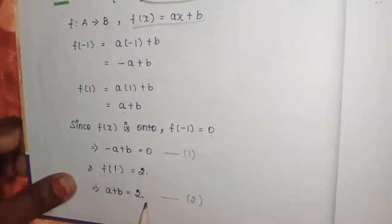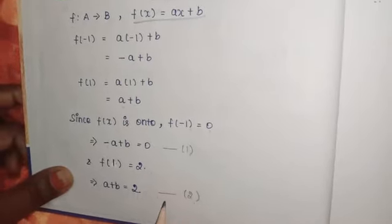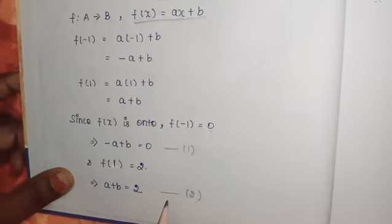So a + b = 2, this is the second equation. Now solve equations 1 and 2 to find the values of a and b.